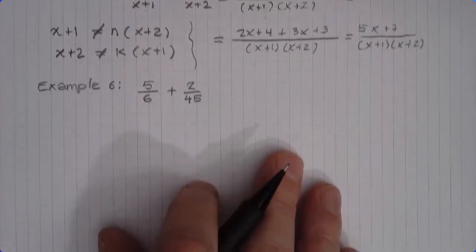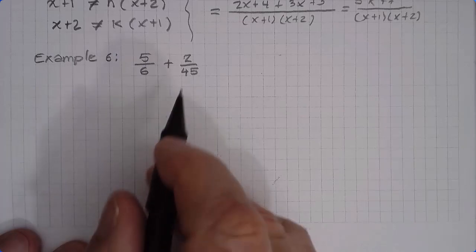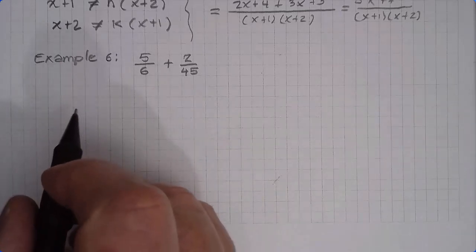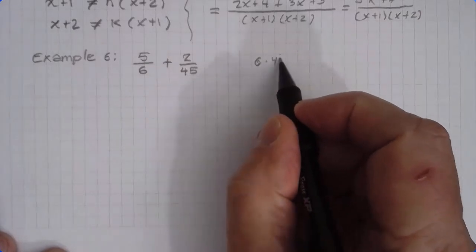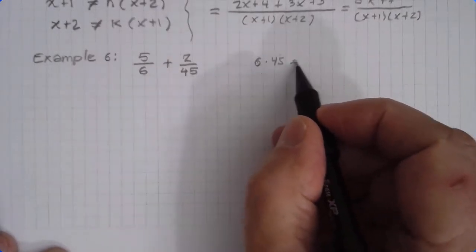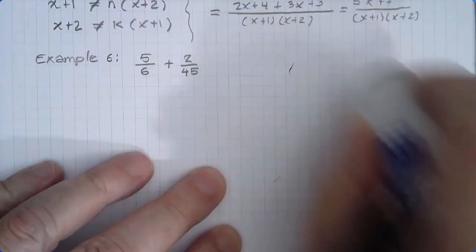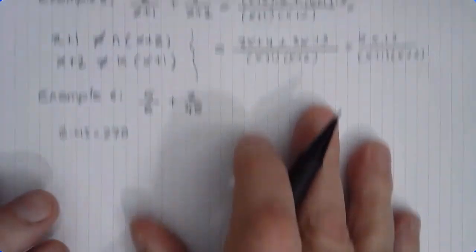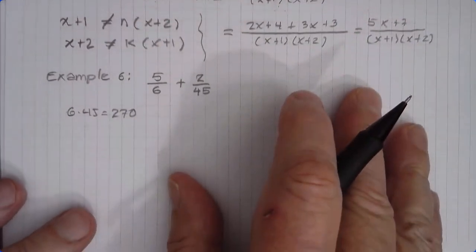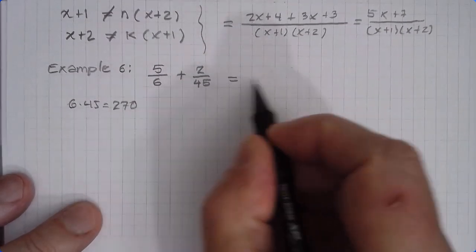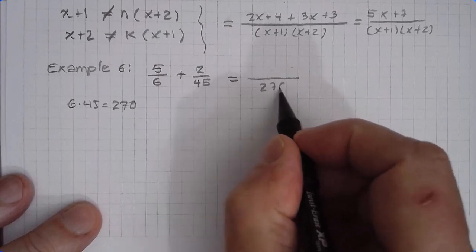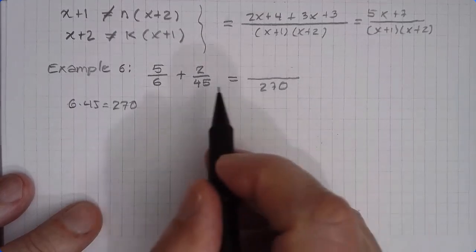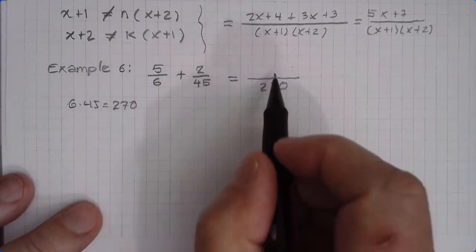Another example: say you want to add 5 over 6 plus 2 over 45. In this case, 6 is not a multiple of 45 and 45 is not a multiple of 6. But if you take the product, 6 times 45 gives you 270. If you use 270 as the common denominator, you end up with very big numbers. That's not a good choice. We're not going to do that.